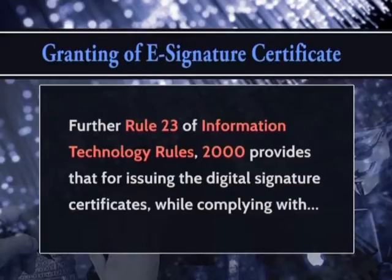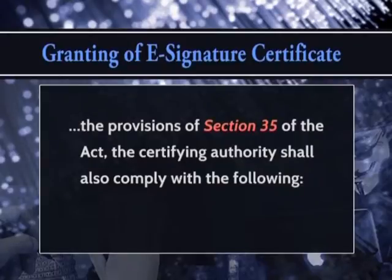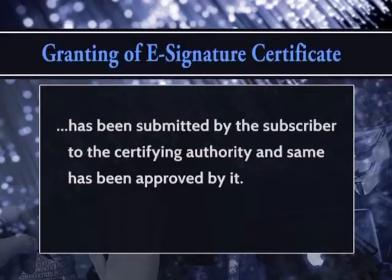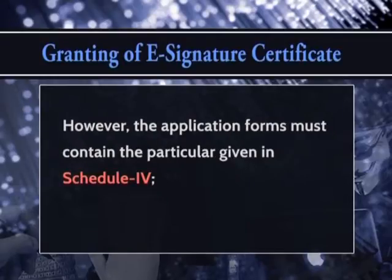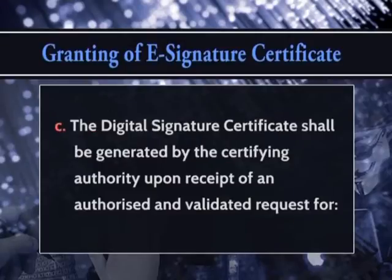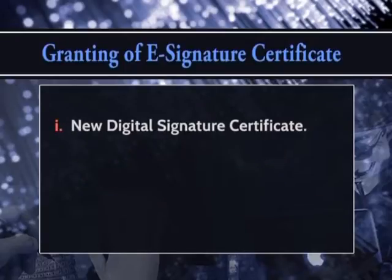Rule 23 of the Information Technology Rules 2000 provides that for issuing digital signature certificates, while complying with the provisions of Section 35 of the Act, the certifying authority shall also comply with the following: the digital signature certificate shall be issued only after a certificate application in the form provided by the certifying authority has been submitted by the subscriber and approved by it. The application form must contain the particulars given in Schedule 4. No interim digital signature certificate shall be issued. The digital signature certificate shall be generated upon receipt of an authorized and validated request.